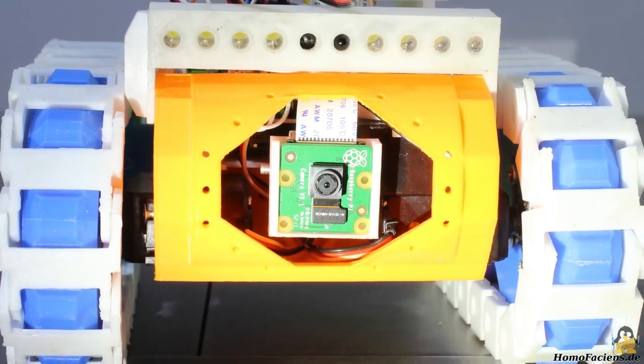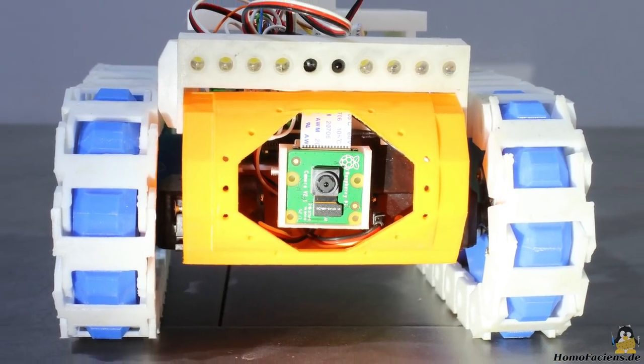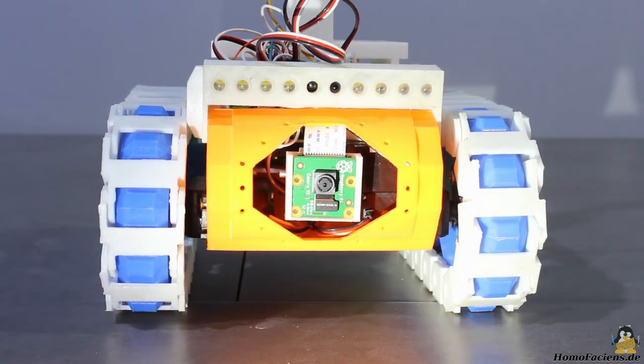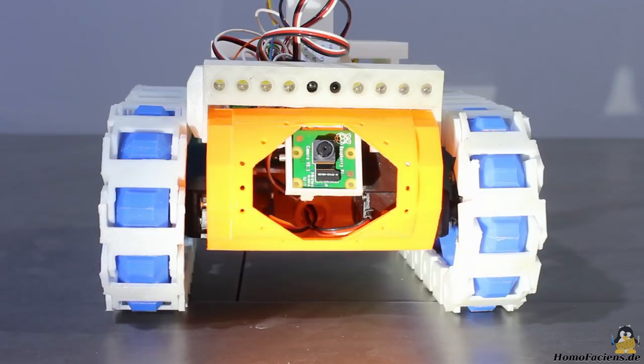A Raspberry camera module is used to transmit live images from my robot room. That camera can be tilted vertically by a third servo.